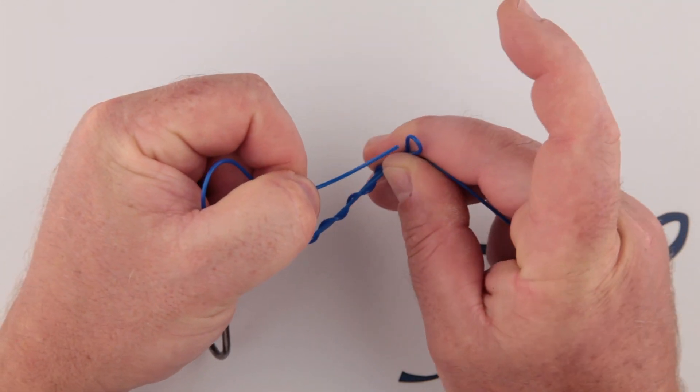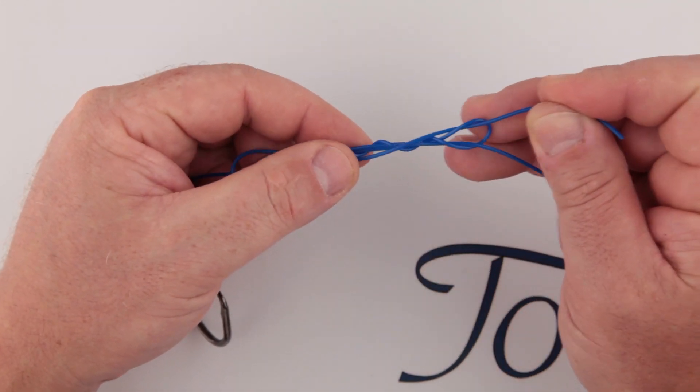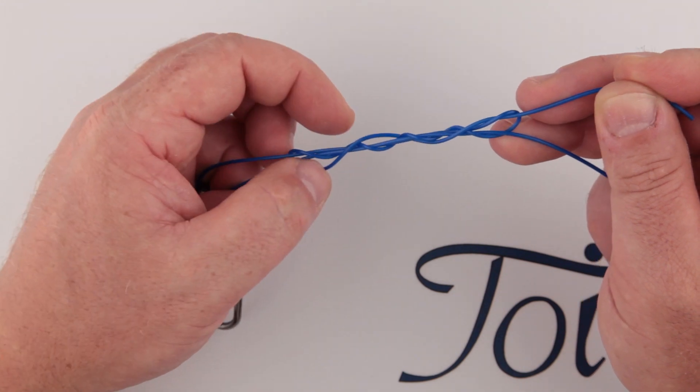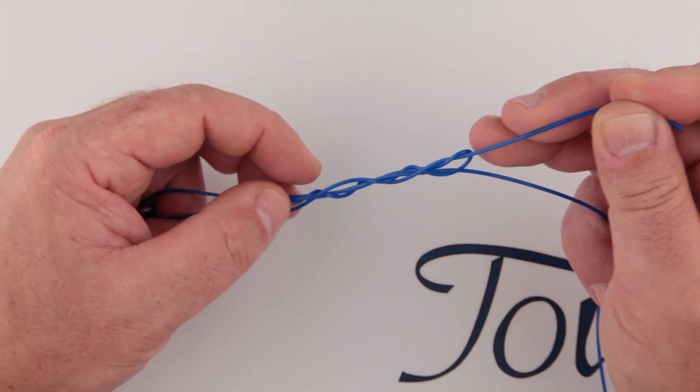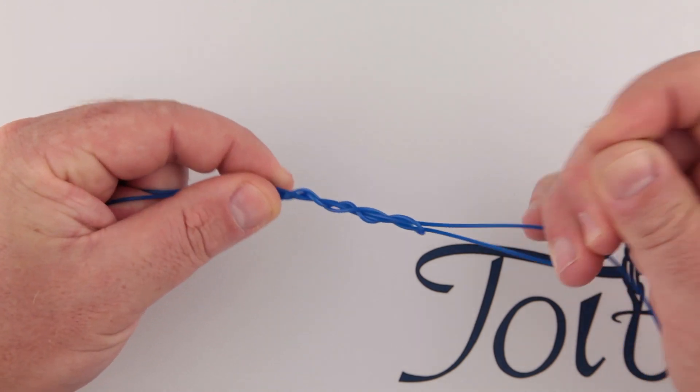Then take the tag end and pass it through the loop, which is being held by your right hand near the top of the knot.